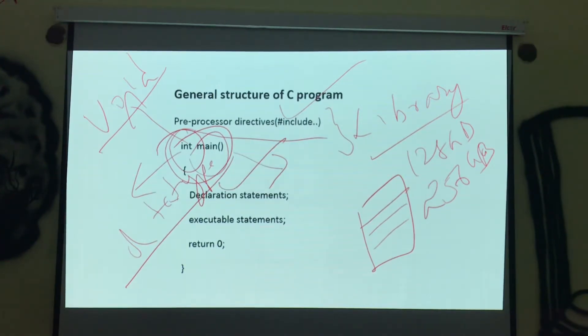And here declaration statements, executable statements, return 0. Declaring statement in the sense, what we are trying to do with this. For example, class marks is there, we are going to declare that, class marks are there. Executable statement, average of the total class. Why return 0? So if it is void main, we do not need a return 0. But if it is integer main, we need a return 0 because integer has a value. And I do not want to waste my memory space. That is the reason I am giving 0 here.